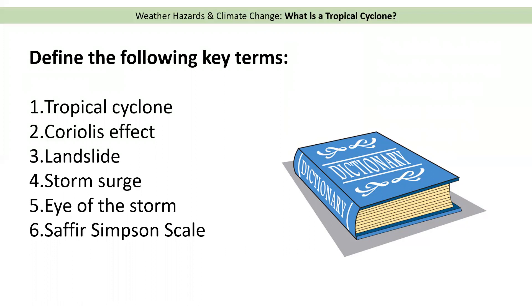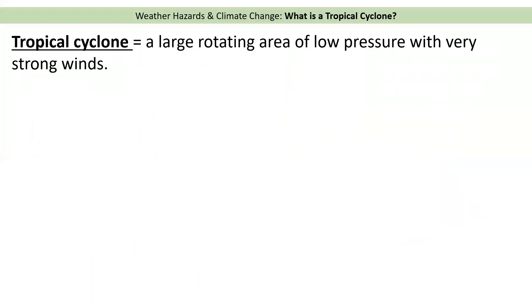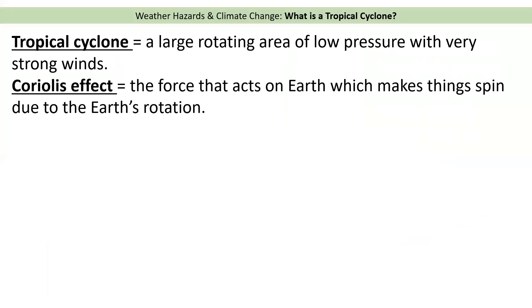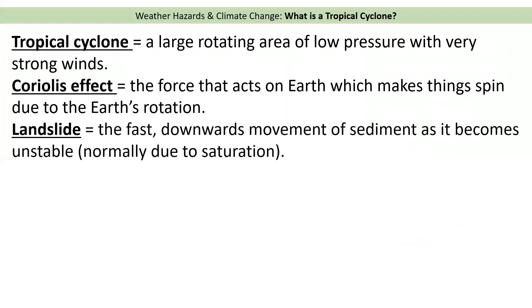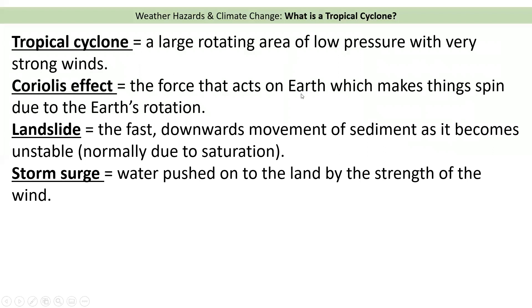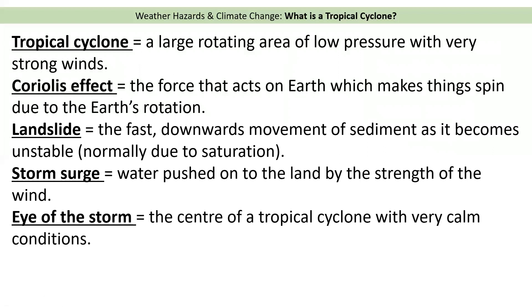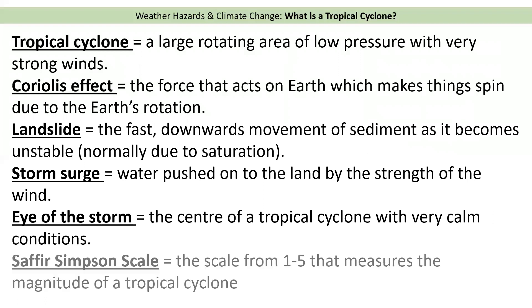These are the key terms: a tropical cyclone is a large rotating area of low pressure with very strong winds. The Coriolis effect is the force that acts on the earth which makes things spin due to the earth's rotation. A landslide is a fast downwards movement of sediment as it becomes very unstable — normally through saturation. Storm surge is when water is pushed onto the land by the strength of the wind. The eye of the storm is the center of the tropical cyclone with very calm conditions. The Saffir-Simpson scale goes from one to five and measures the magnitude — the strength — of a tropical cyclone.